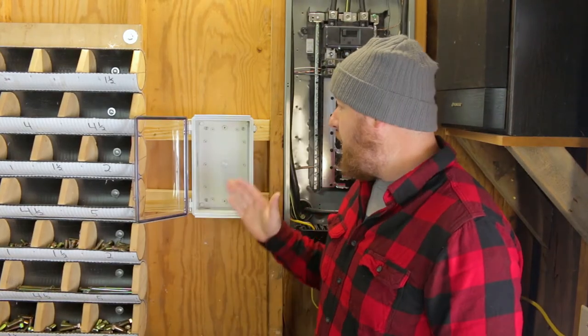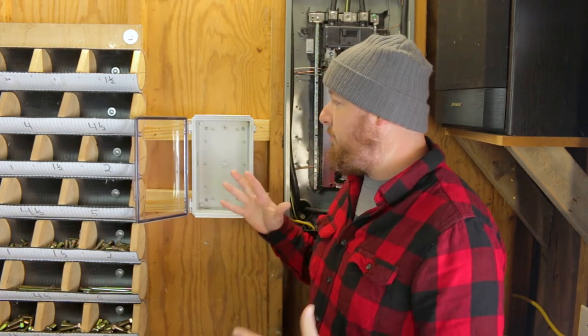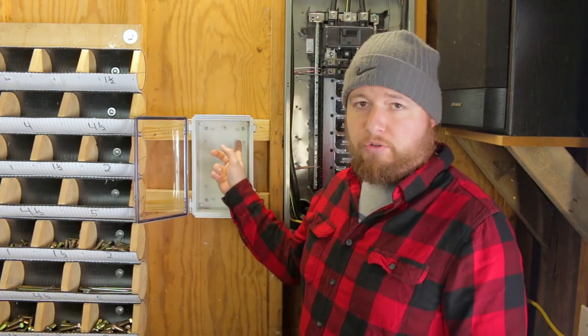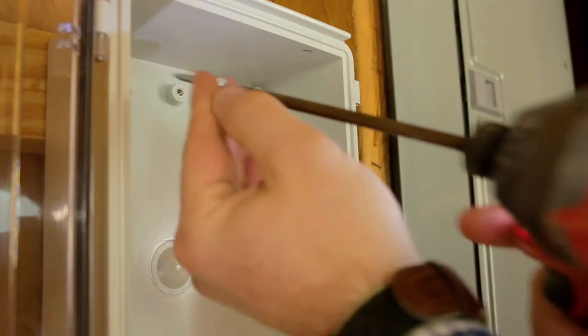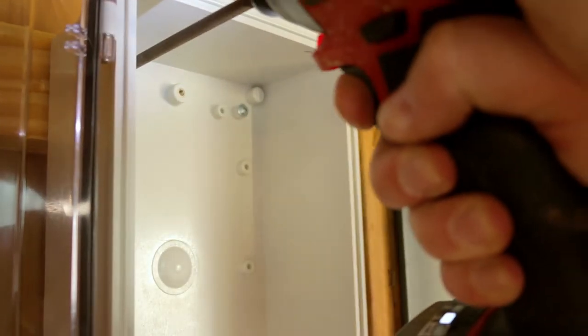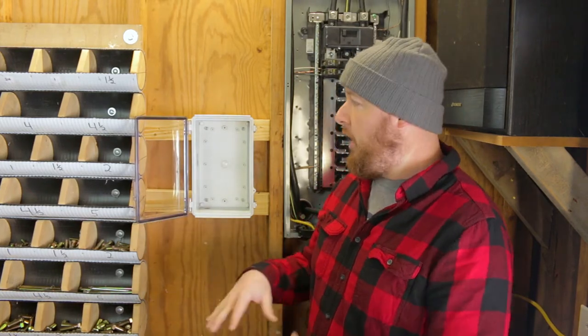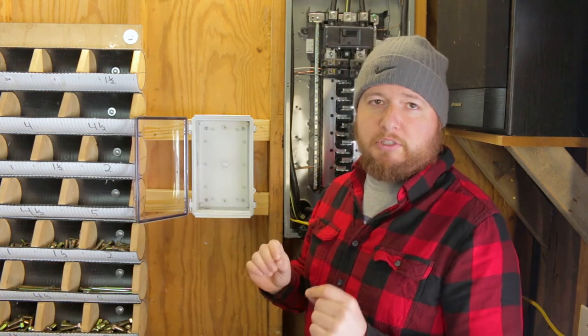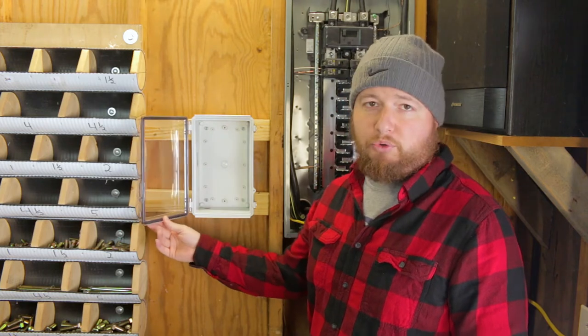The first thing we did is we took the enclosure that comes with EKM Metering's package and mounted it to the wall. We drilled four holes in the back and screwed it onto a backing plate really close to our electrical panel. The only thing I'd recommend when mounting this is make sure you have enough space when opening and closing this door and clearances around it because we're going to be working in here with really small wires. Make sure you mount this where you can open this door easily.